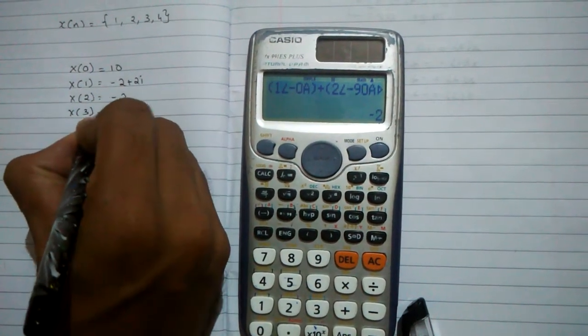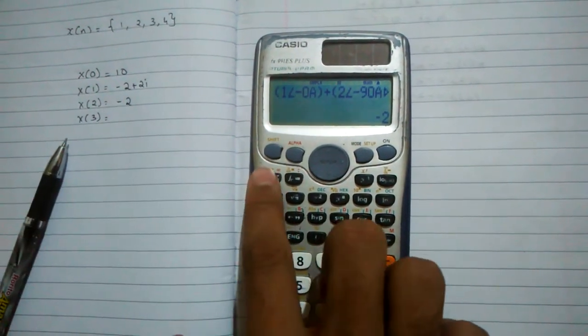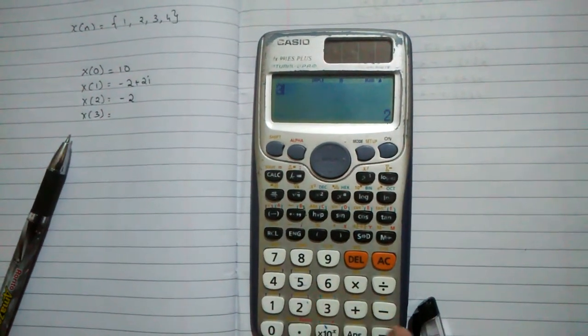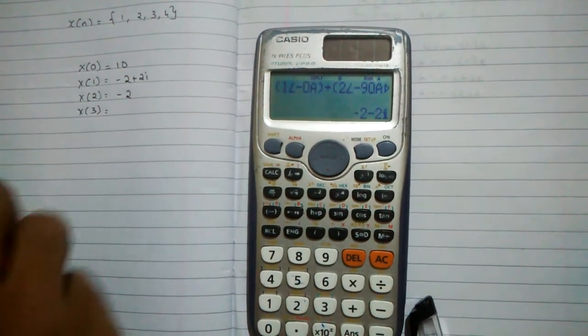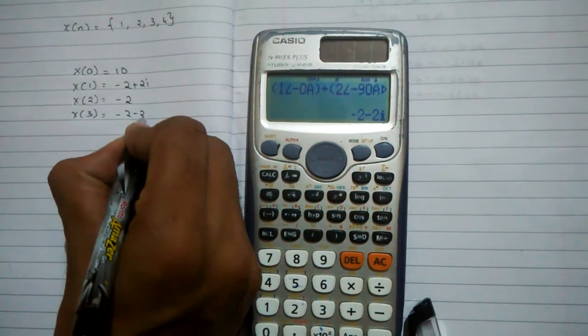To find x of 3, hit calculate again, then plus 3 and hit equals. The value is minus 2 minus 2i.